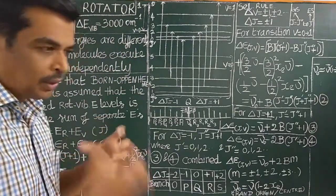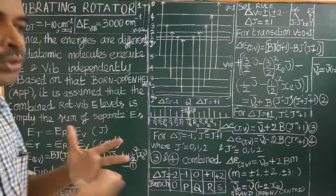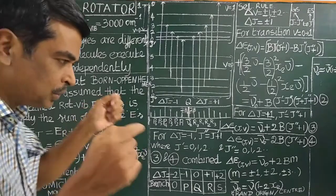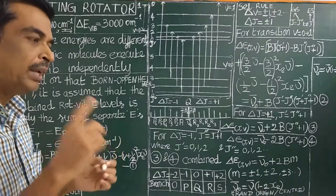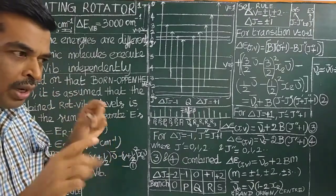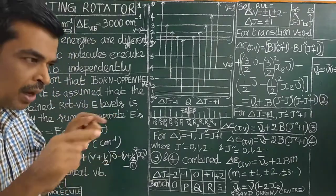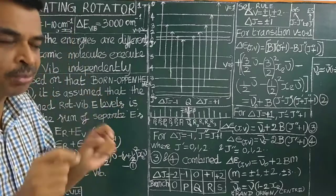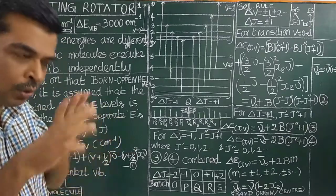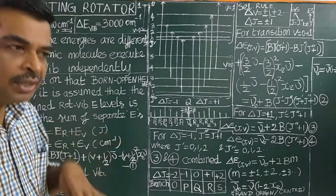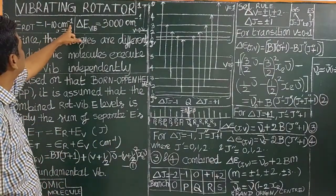When a molecule undergoes vibration, there will be rotational motion also — a molecule vibrates and rotates. In a rigid rotator there will be only rotation, and in a simple harmonic oscillator there will be only vibration. But in real life, in a real molecule, there will be both vibration and rotation.